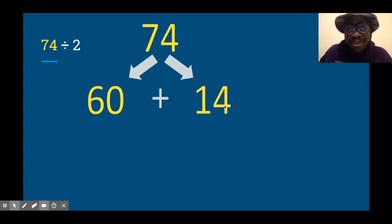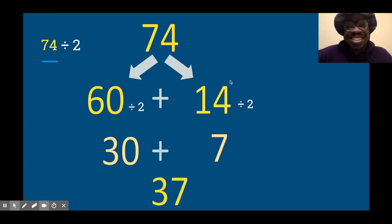So 60 divided by 2—something times 2 equals 60, that's 30. 30 times 2 is 60. And then over here, 14 divided by 2, that's easy, I know that's 7. So 30 and 7 together make 37. 74 divided by 2 is 37. One, two, let's go!